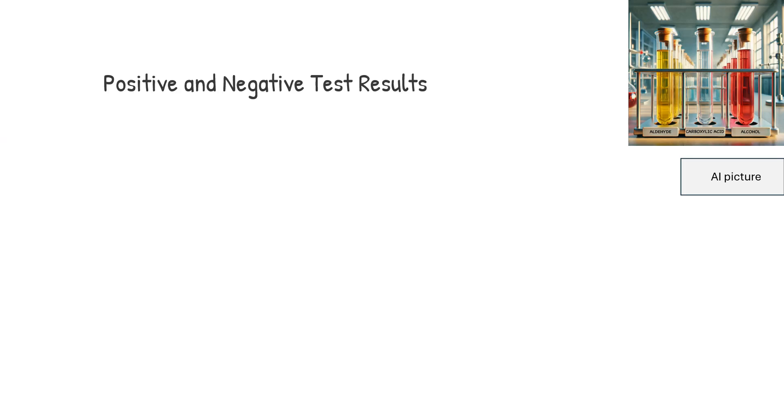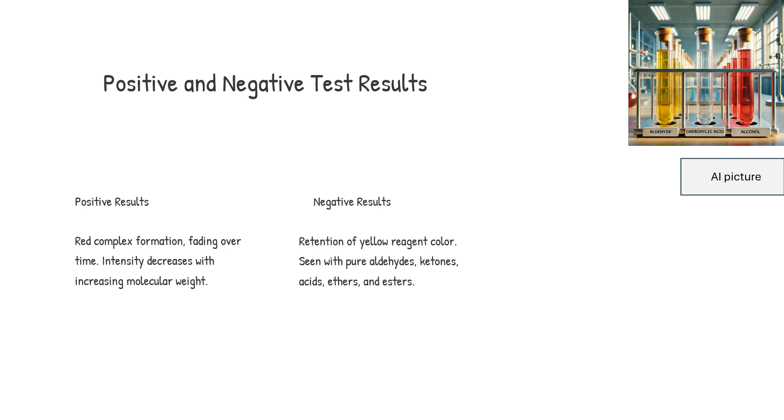Positive tests are indicated by the formation of a red complex, which may fade over time. The intensity of the red color decreases as the molecular weight of the alcohol increases. Negative tests are shown by the retention of the yellow color of the reagent. Pure aldehydes, ketones, saturated and unsaturated acids, esters, and dibasic and tribasic acids produce negative tests. Some compounds like oxalic and malonic acid reduce Ce4+ to colorless Ce3+ without forming a red complex.